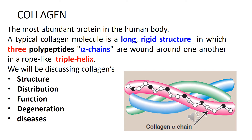Collagen is the most abundant protein in the human body. As you can see in this figure, a typical collagen molecule is long and rigid, and it has three polypeptide chains which are referred to as alpha chains. These chains are wound around one another in a rope-like triple helix, as you can see in this figure.